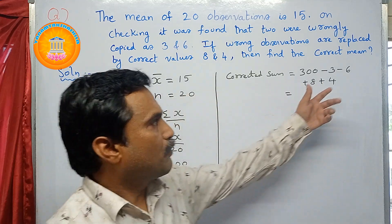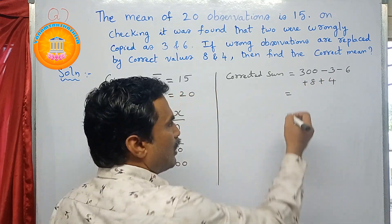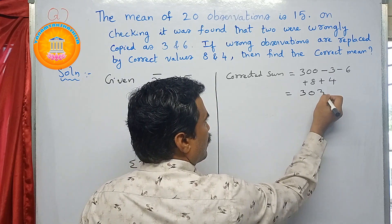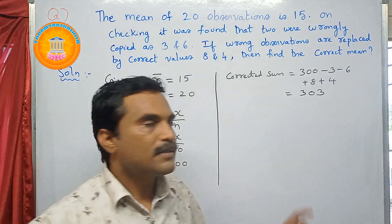So what you will get? Subtract this, so total you will get value is 303. So this is the corrected sum.